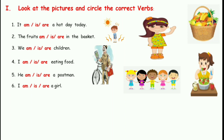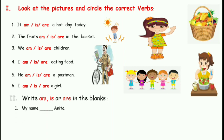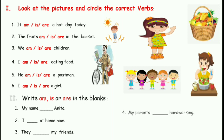The next question: Write am, is or are in the blanks. First: My name blank Anita. Anita is one person, so: My name is Anita. Second: I blank at home now. The verb that follows I is am, so: I am at home now. Third: They blank my friends. Friends means more than one, and they also means more than one, so: They are my friends. Fourth: My parents blank hard working. Parents means mummy and daddy — more than one, plural — so: My parents are hard working.